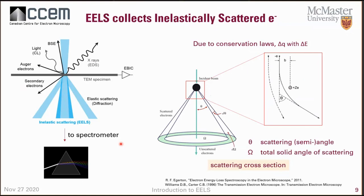Due to conservation laws, you have a change in momentum resulting in a scattering angle — called the scattering semi-angle — and a total solid angle of scattering. Taking the integral over this whole area gives you the scattering cross section. When an electron interacts with an atom, signals can be scattered at an angle described by the scattering cross section. This is very useful to know when you want to do quantification of your materials.